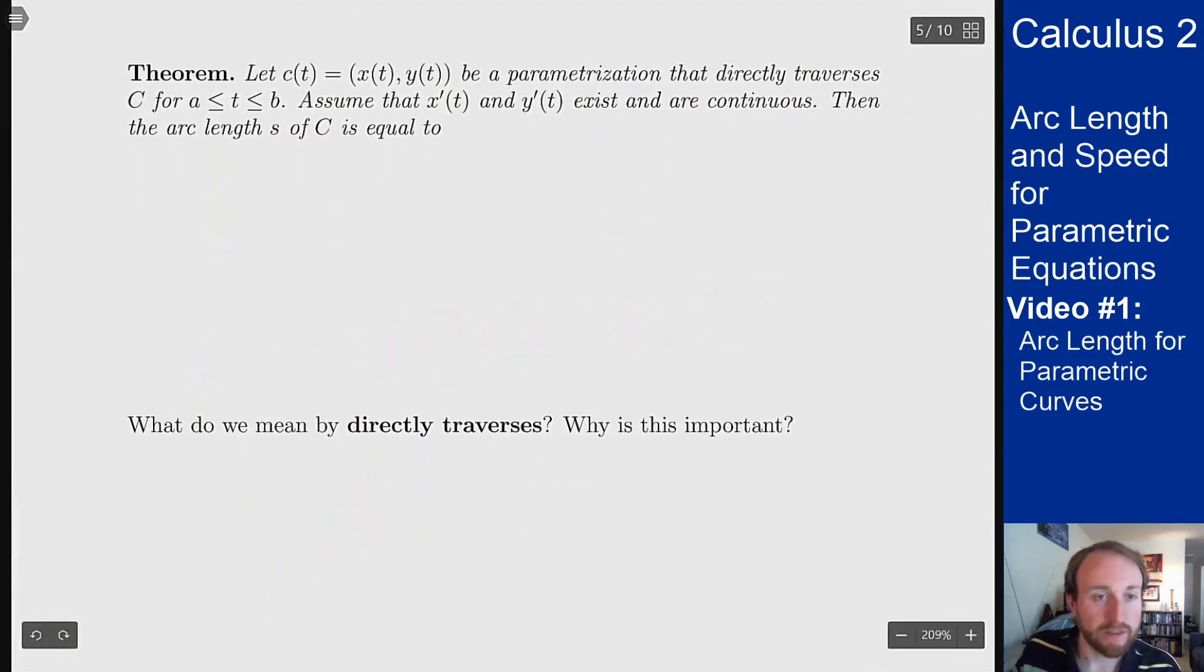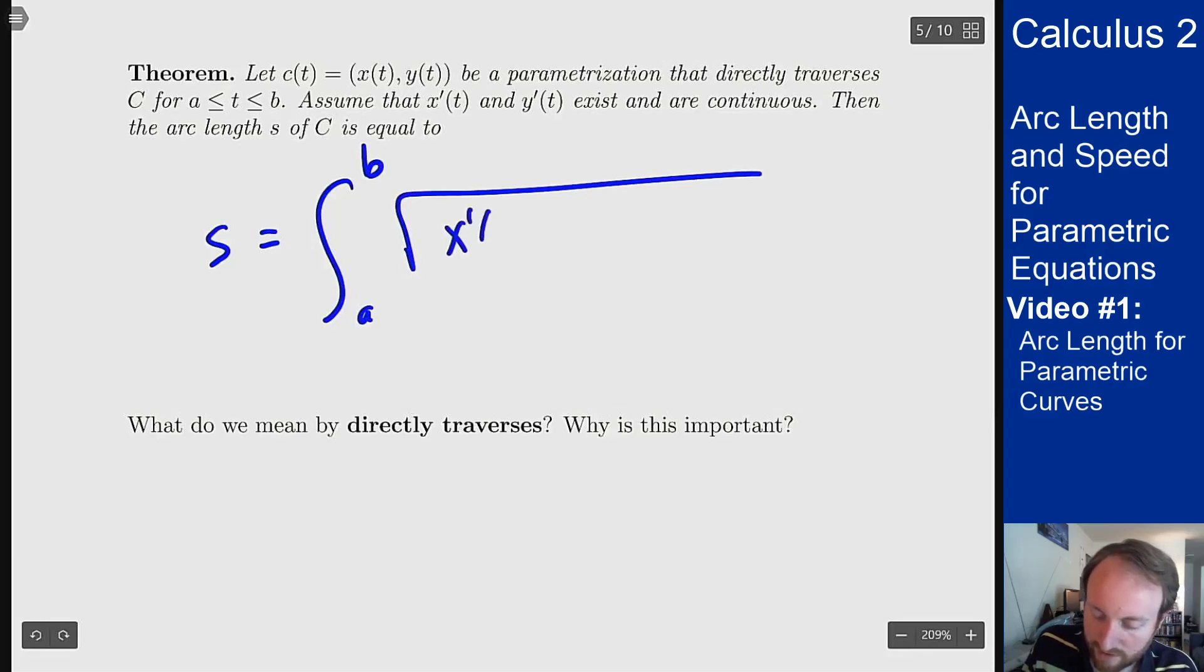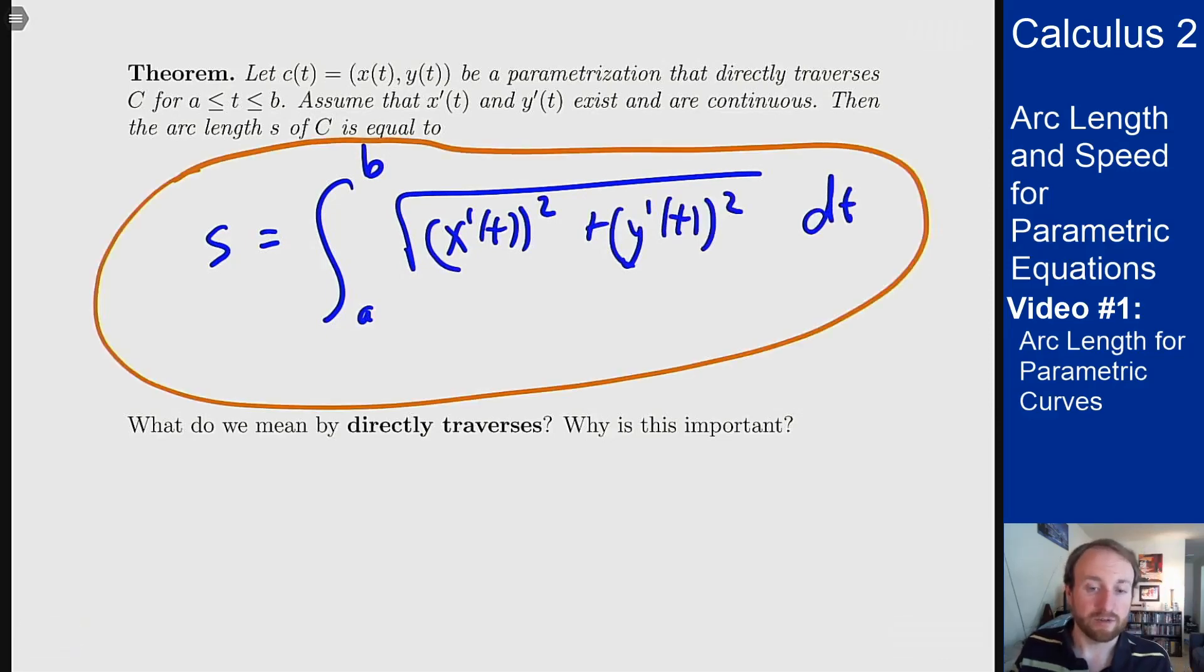So to summarize we have the following theorem. Let c of t be a parametrized curve x of t, y of t that directly traverses my curve c between t equals a and t equals b. I'll talk about that word in a second. Assume that x prime and y prime exist and are continuous. That is what allows us to apply the mean value theorem to get those derivatives coming out of the approximation. Then my arc length s of this curve c is equal to the integral from a to b, square root of x prime of t squared plus y prime of t squared dt. That's how we compute arc length for parametric curves.